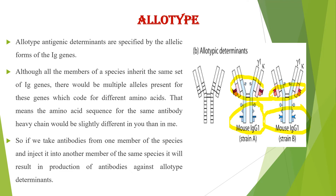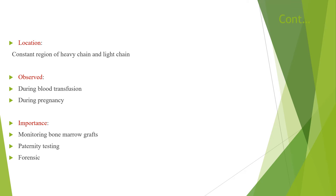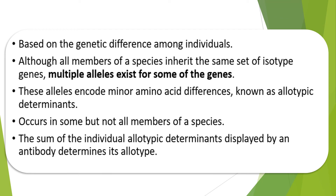Looking at the structure, there are different types, such as Mouse IgG1 strain A and Mouse IgG1 strain B — when injected together into the same individual, there must be a difference in the reactions. Allotypic determinants are located in the constant region and hinge regions, and are observed during blood transfusion and pregnancy. The importance of allotype includes monitoring bone marrow grafts and paternity testing. Based on genetic differences among individuals, multiple alleles exist for some genes, and these alleles encode minor amino acid differences known as allotypic determinants.